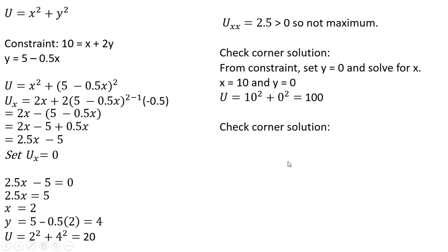Let's check another corner solution. Let's set x equal to 0 and solve for y. So with this constraint, x equals 0, solving for y, you're going to get 10 divided by 2, or y equals 5. Plugging that into the utility function, this is smaller than in our first case, so our utility maximizing choice would be this corner solution where the consumer buys 10 units of x at $1 each and doesn't buy anything of good y. Let's look at this last example graphically.